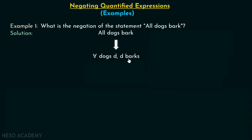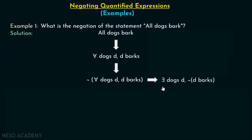After this, we will put a NOT in front of this sentence. So this becomes: NOT for all dogs d, d barks. Then we can move this NOT towards the right, so this for-all becomes there-exists. This is how it looks: there exists dogs d, NOT d barks.